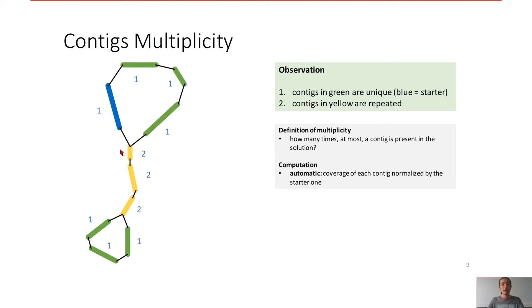And for yellow contigs, because they belong to the repeats, their multiplicity equals 2. These are the perfect multiplicities values. So all these multiplicities are computed automatically from now.